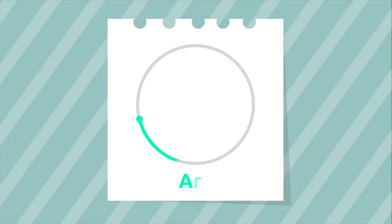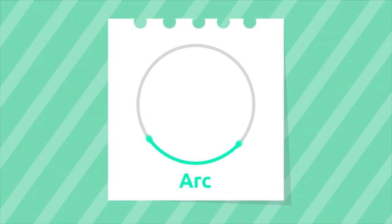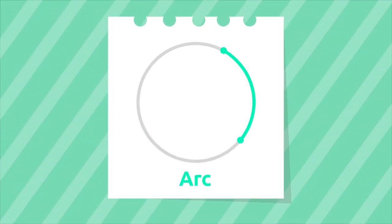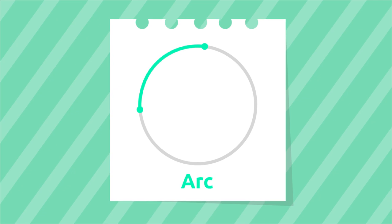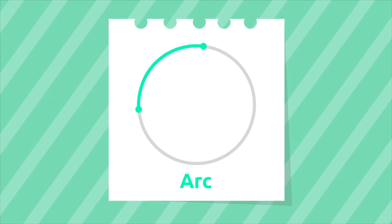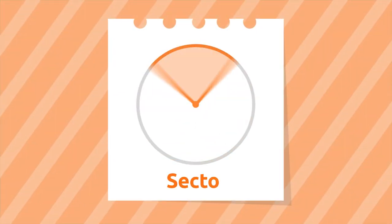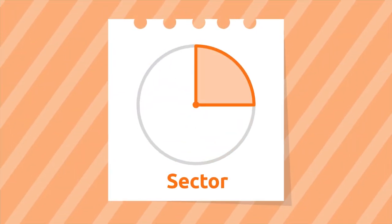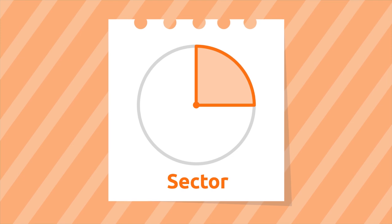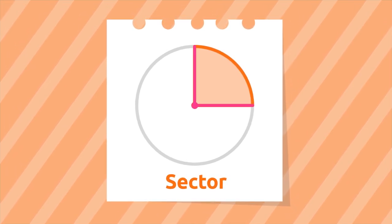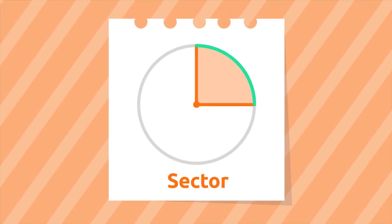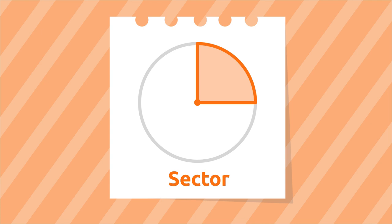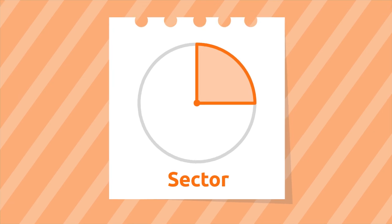The arc is the part of the circumference that lies between two points. The sector is the region between two radii and their arc. Look — it's a slice of pizza!